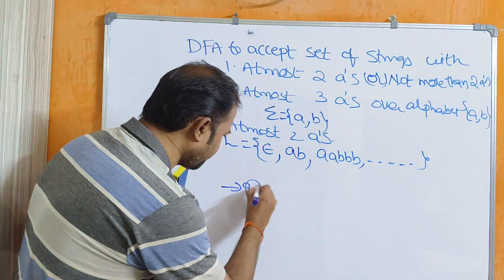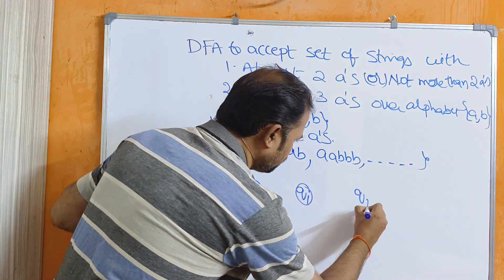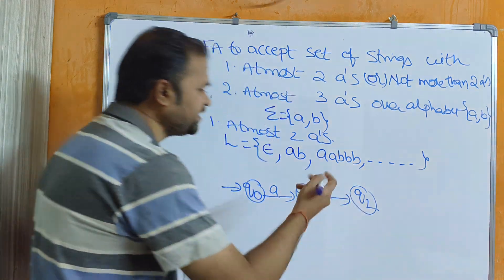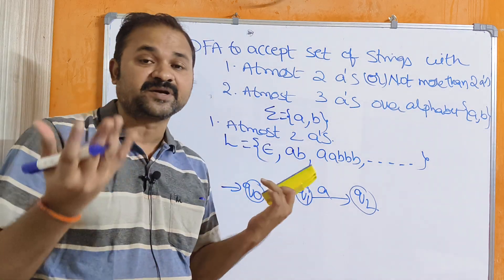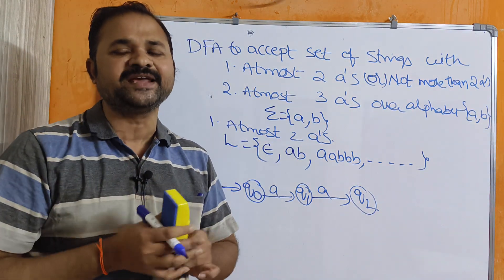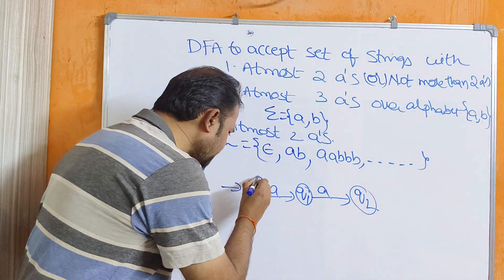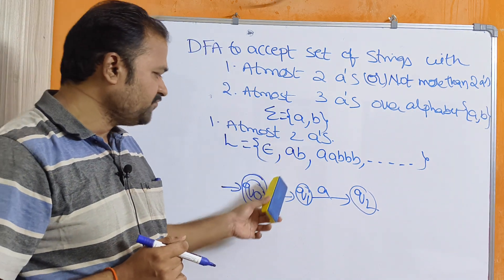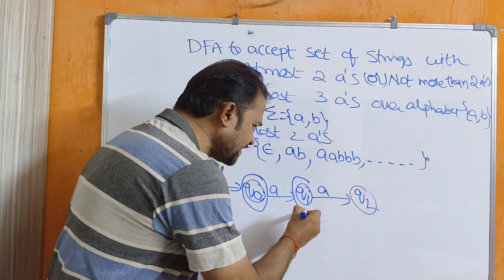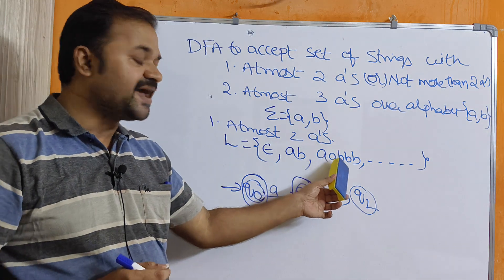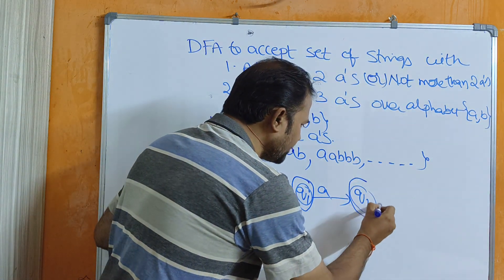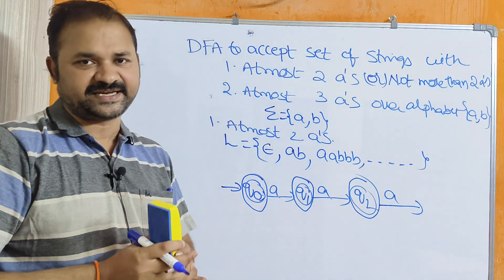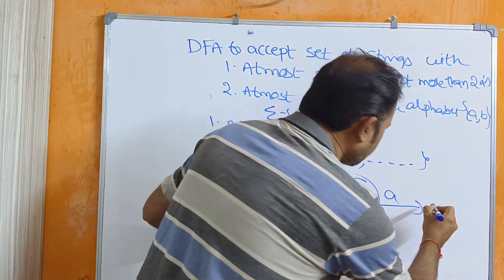The first state is Q0, next is Q1, and next is Q2. Q0 on applying A goes to Q1, and Q1 on applying A goes to Q2. Since we can accept 0 A's (epsilon), without applying any input symbol we can reach the final state. So we make Q0 the final state, enclosed in a double circle. We can also have a single A, so Q1 is a final state. We can have 2 A's, so Q2 is also a final state. If we read another A on Q2, that leads to a non-final dead state, which is the Q-pi state.